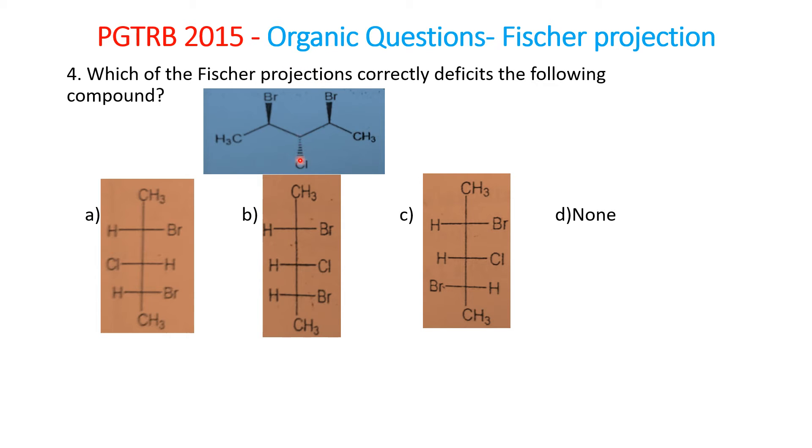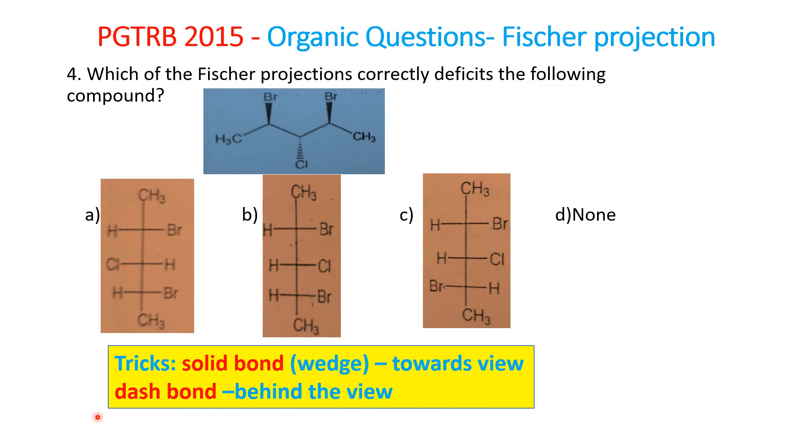The dashed line is behind the view, away from the viewer. These are the two things you need to know. If you understand this, it's very easy - solid bond is towards the view, dashed line bond is behind the view, away from you.